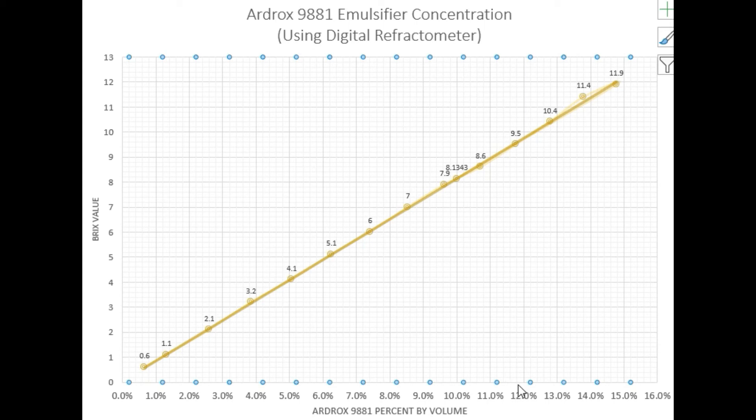Percent by volume. In this case we have a value approximately of 11.8 percent by volume of emulsifier. That means the tank content will be 11.8 percent emulsifier.